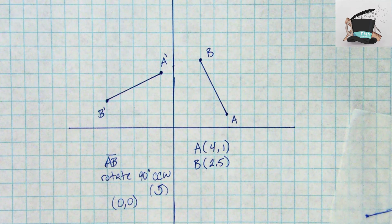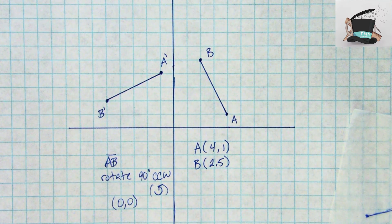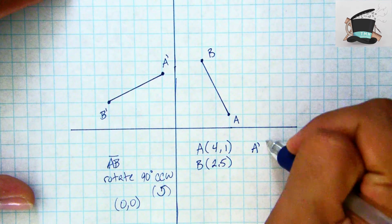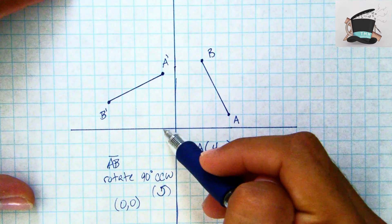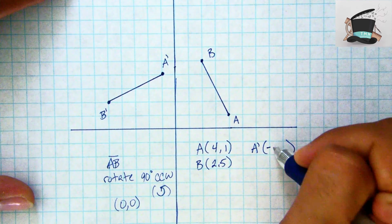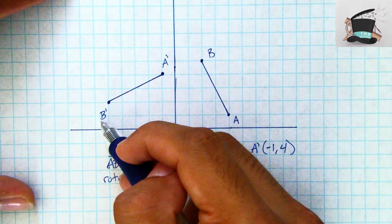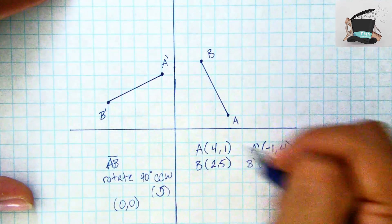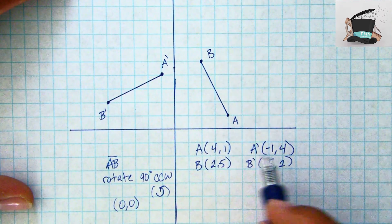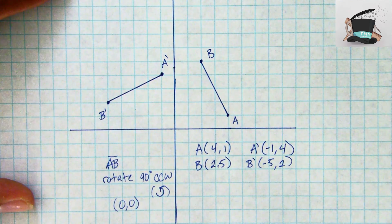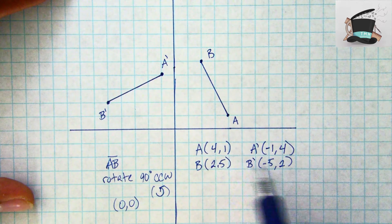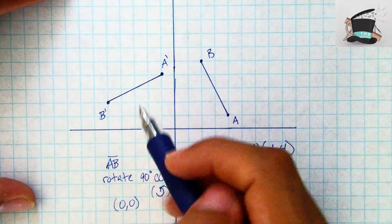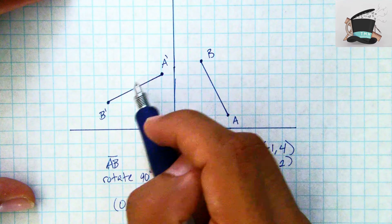And something that you might want to take a note of is if I were to write out the coordinates for A prime, we would see that A prime is now at negative 1 positive 4, and if I look at my new points for B prime it looks like this guy is at negative 5 and then up 2. So looking at our points and how they change, it looks like our x and our y's were flipped, they change spots, and it looks like our x values are now negative right, because we're in quadrant 2 their rotation is going to make all those x values negative.